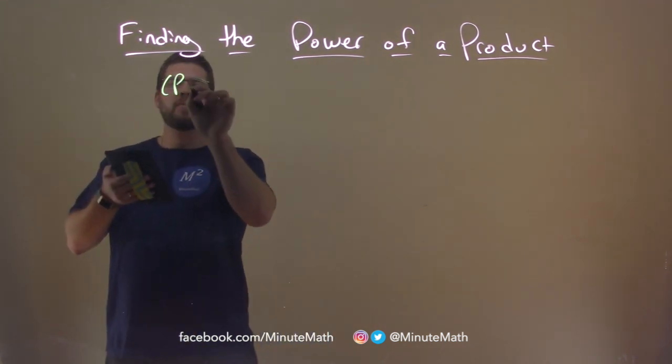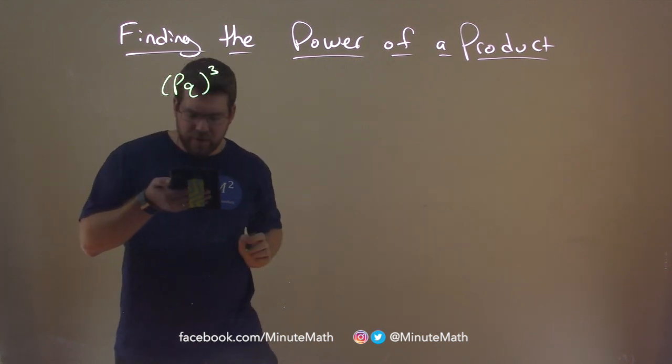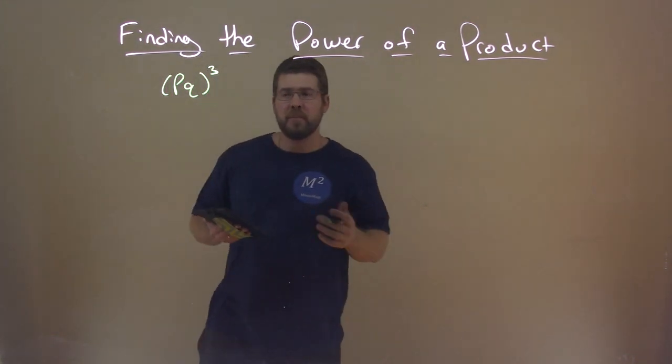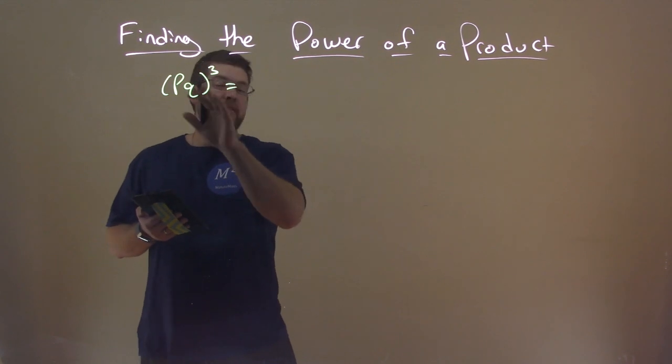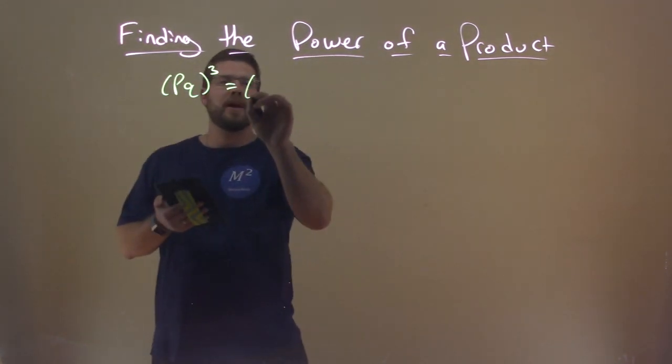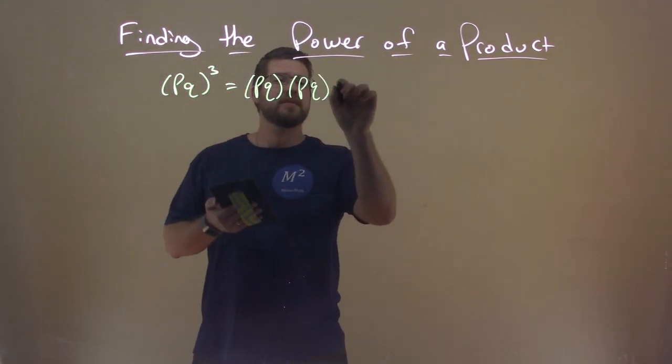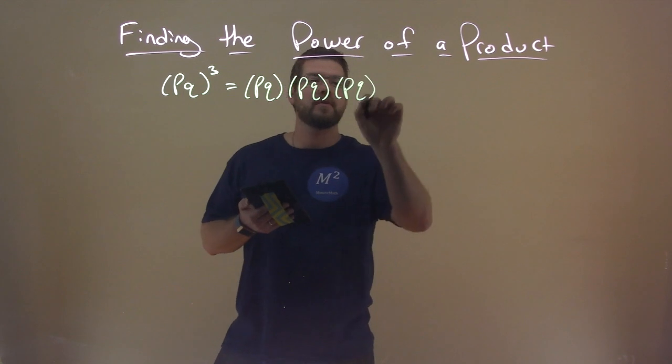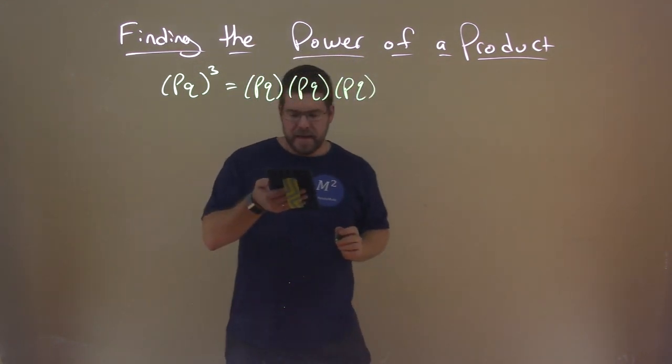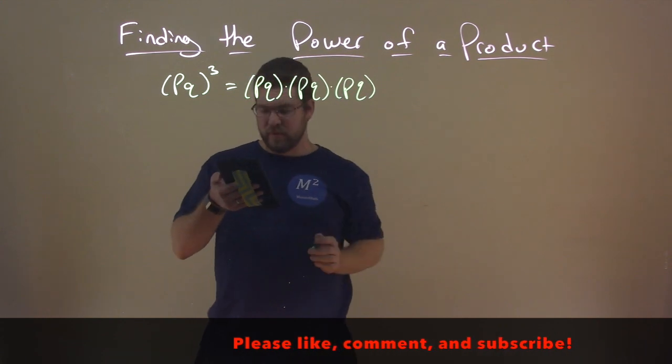If we have the letters P and Q in parentheses, and we have that all to the third power, what we know to the third power is taking this P, Q, and multiplying it by itself three times. So we have P times Q times P times Q times P times Q. And those are our three factors being multiplied together.